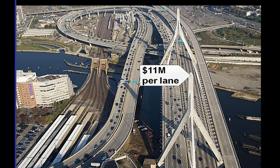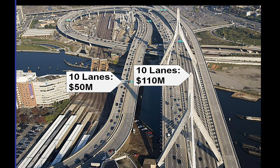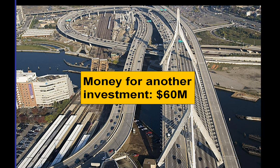Here's the kicker: the bridge on the right is $11 million per lane; the bridge in the middle is $5 million per lane. Do the math: that's $60 million that, if you had built the bridge in the middle multiple times to serve the same traffic, you would have saved. That's money you can use for some other investment.